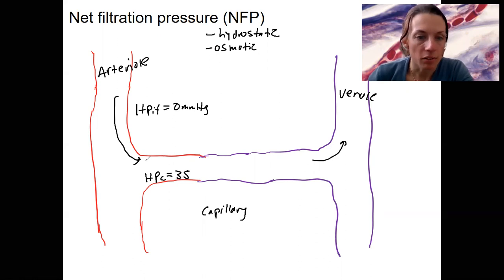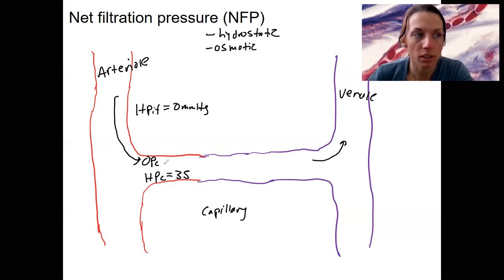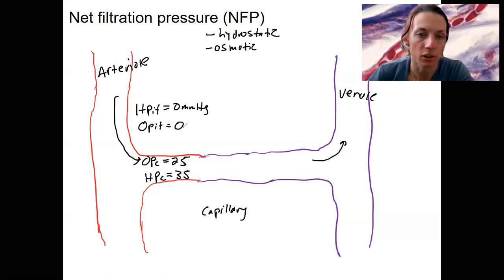We then have osmotic pressure in the capillary. That's due to all that protein and red blood cells that can't leave — 25. And we're going to say osmotic pressure in the interstitial fluid is zero.